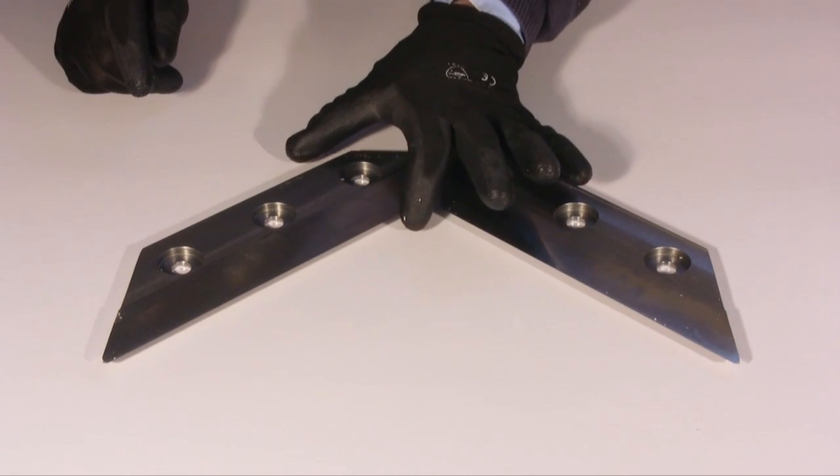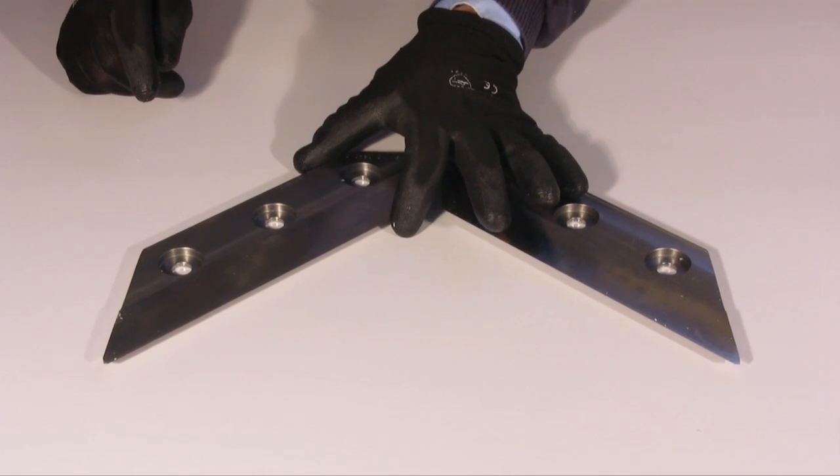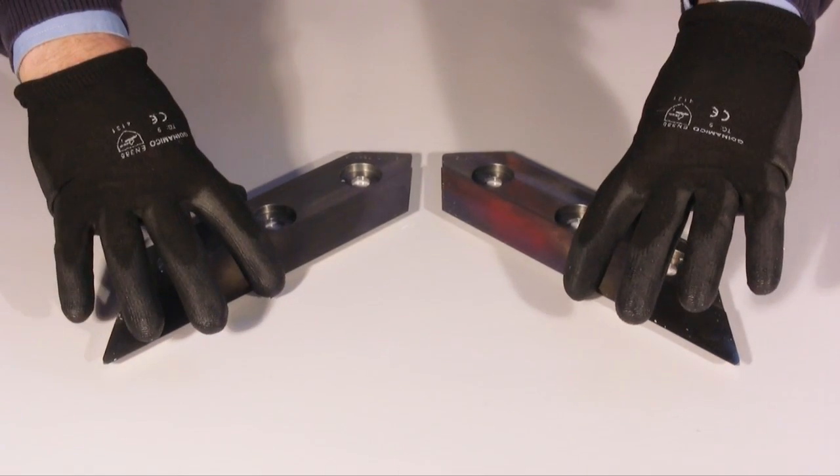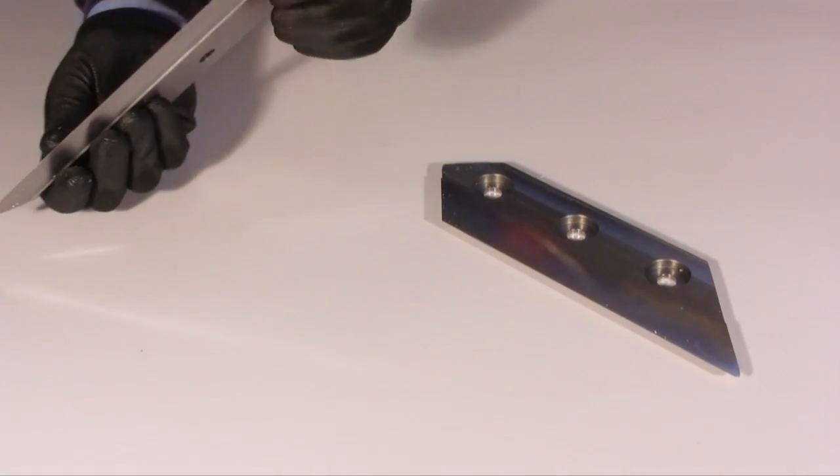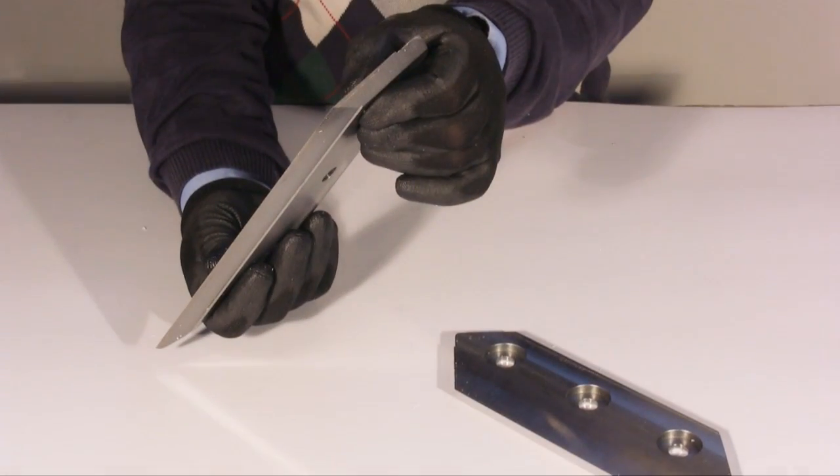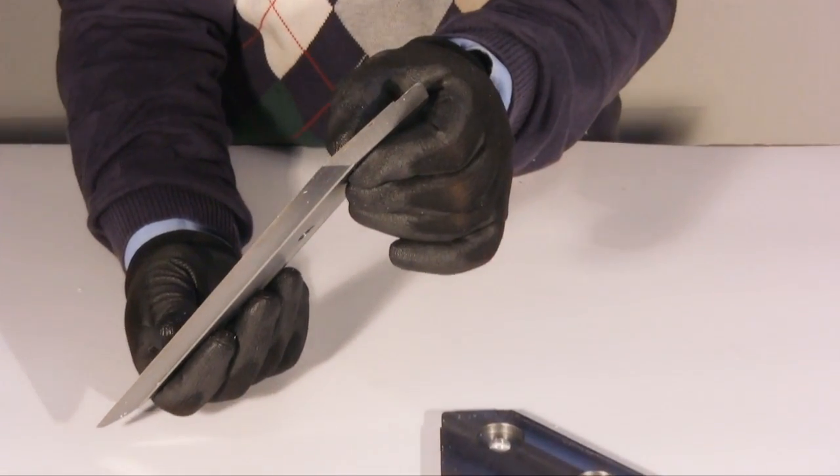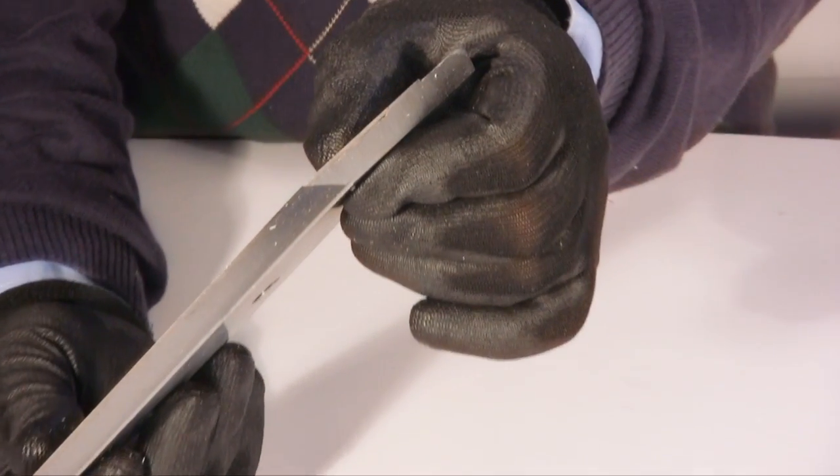When they are bought the blades are 7.7 cm high. Their height reduces by about 1 mm every time they are sharpened. When their height is reduced by 5 cm the blades aren't any more fit for use.